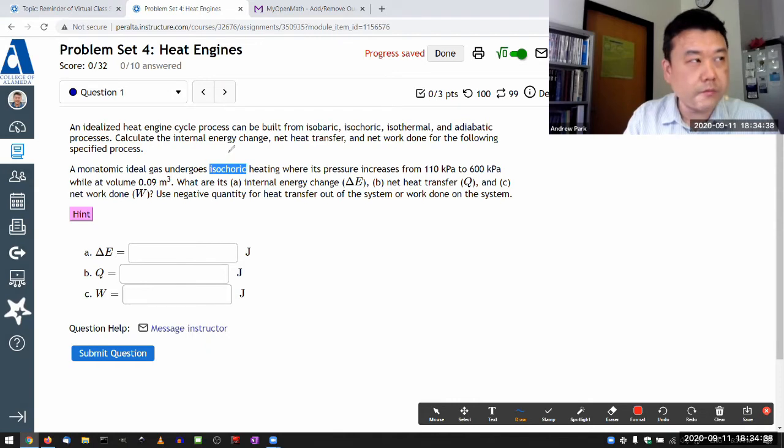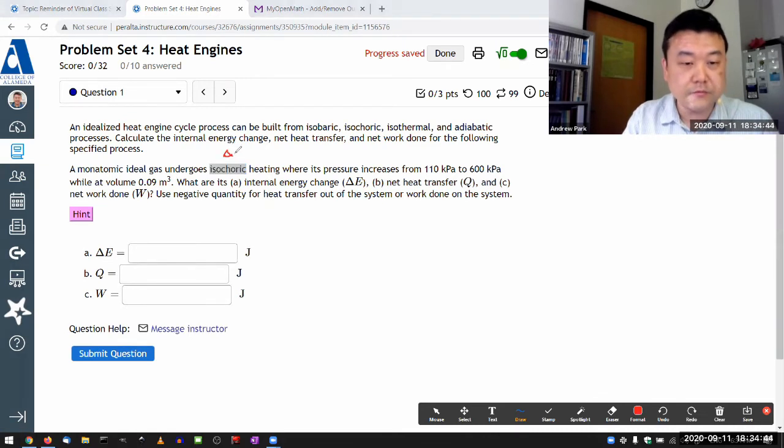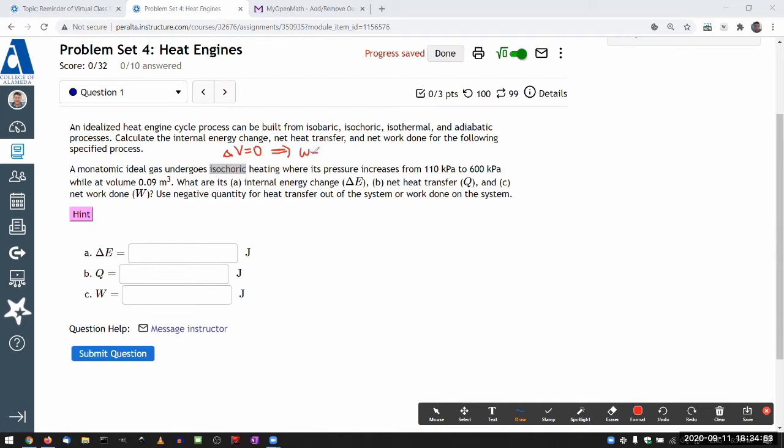Choric comes from the Greek word meaning place. It means same place, same volume, same space. So change in volume is zero. And that leads to work done always being zero for isochoric processes.